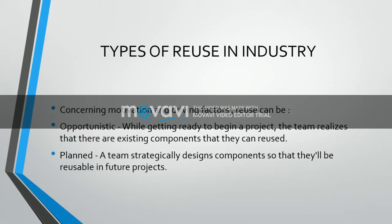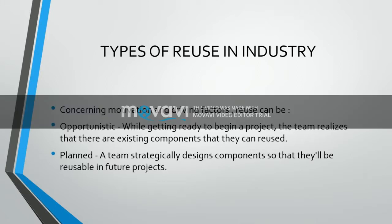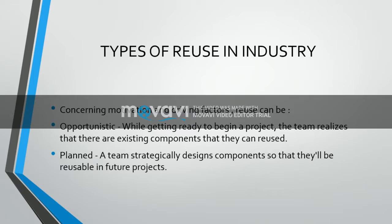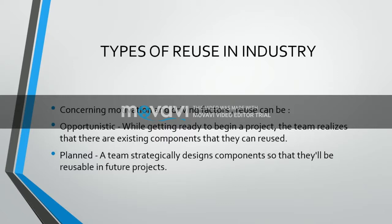Types of reuse in general industry — considering motivation and driving factors, reuse can be opportunistic or planned. Opportunistic reuse: while getting ready to begin a project, the team realizes there are existing components that can be reused. If you get a requirement, first check whether this kind of project or domain has already been worked on. If it is a new domain, we need to start from scratch. For example, a car company manufacturing the same model reuses common parts like the steering wheel, four wheels, and brakes. The brake system can be changed, but some components are reused. Planned reuse: systematically design components so that they will be reusable in future projects.